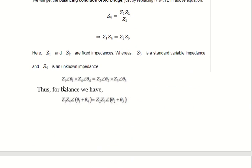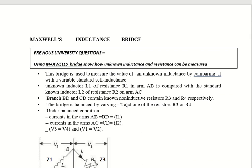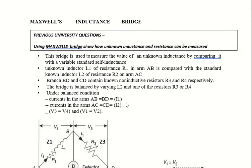So Z4 is Z4∠θ4, and the balance condition Z1·Z4 = Z2·Z3 becomes: Z1∠θ1 · Z4∠θ4 = Z2∠θ2 · Z3∠θ3, meaning θ1 + θ4 = θ2 + θ3. Now we study the Maxwell bridge, an AC bridge used for measuring the inductance of a circuit — Maxwell's inductance bridge.